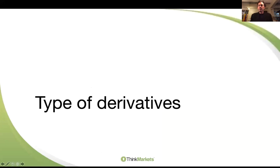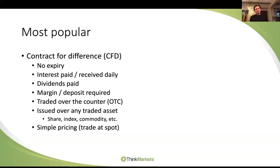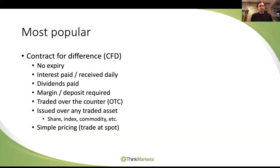Types of derivatives. The most popular is a contract for difference, a CFD. They arrived in South Africa about 13 years ago. Key points for CFDs: they don't have an expiry date; interest is paid or received daily; dividends will be paid; margin or deposit is required; they're traded over the counter - not on the JSE or New York Stock Exchange. They can be issued over pretty much any traded asset: shares, indices, commodities, FX.